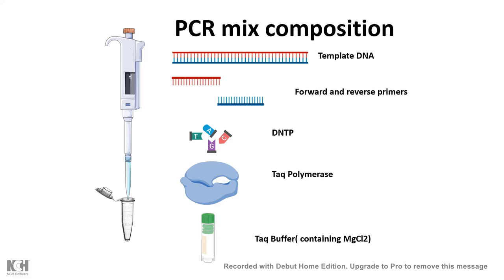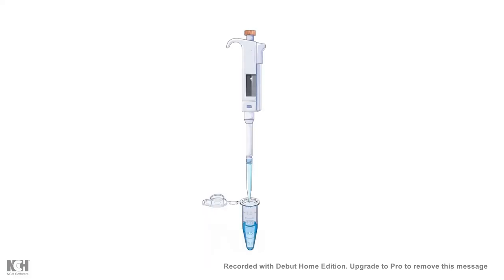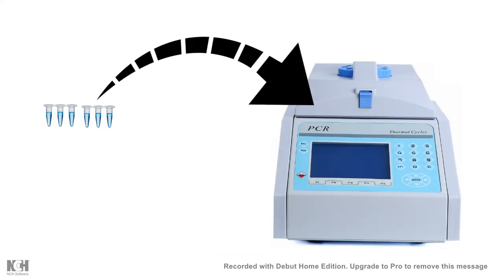You also need the polymerase, which is equivalent to the scanner of a copy machine — the polymerase polymerizes the new DNA sequences. Since it's an enzyme, it needs optimal pH and temperature, so it works in a Taq buffer. The polymerase used is Taq polymerase, or Thermus aquaticus polymerase, which is stable at high temperatures. After mixing all these reagents, you put them into a thermal cycler, since each step of the reaction happens at a different temperature.